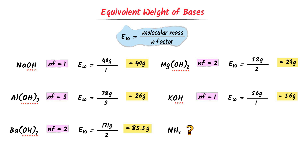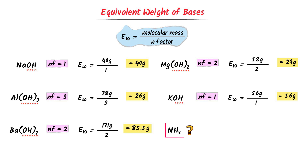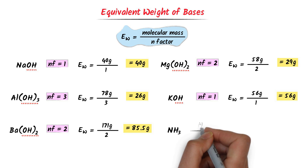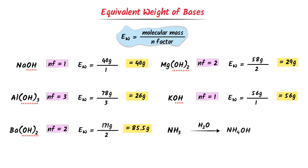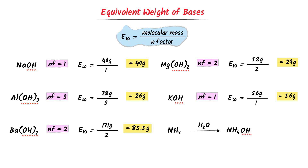What about the equivalent weight of ammonia, NH3? We can see that there is no hydroxide ion present in ammonia. So I add water to it. I get ammonium hydroxide. There is only one hydroxide ion present in ammonium hydroxide, so the N factor of NH3 is 1. Its equivalent weight is equal to the molecular weight of ammonia, which is 17 gram, upon its N factor which is 1. I get 17 gram. So the equivalent weight of ammonia is 17 gram.